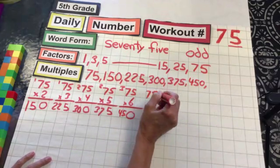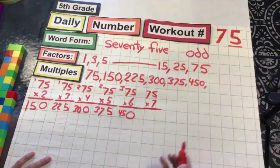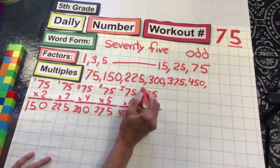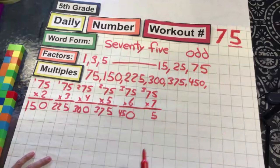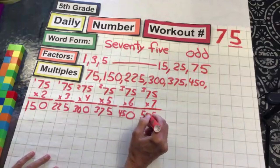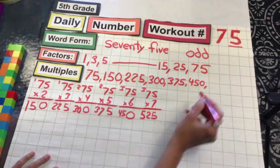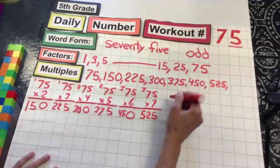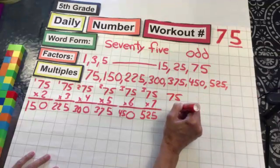Seven 75s: 7 times 5 is 35, drop the 5, carry the 3. 7 times 7 is 49 plus 3 is 52 — five hundred and twenty-five. Eight 75s.